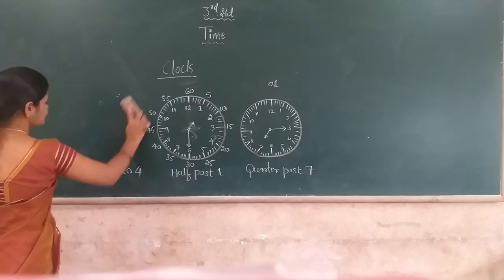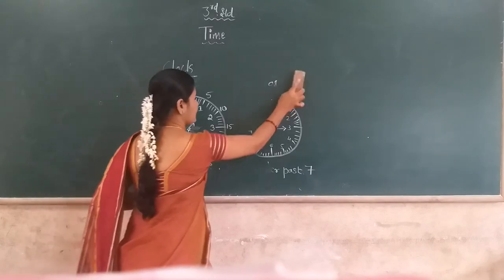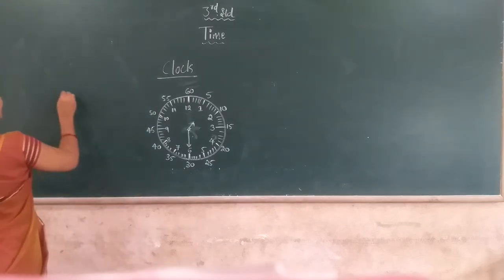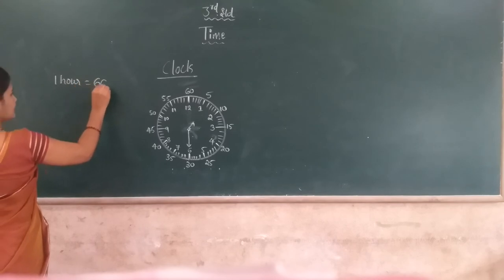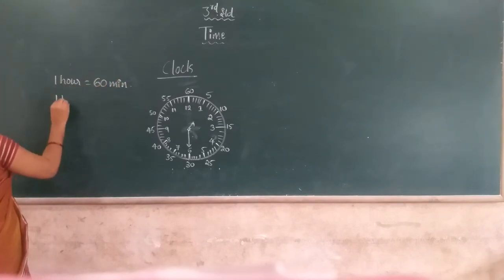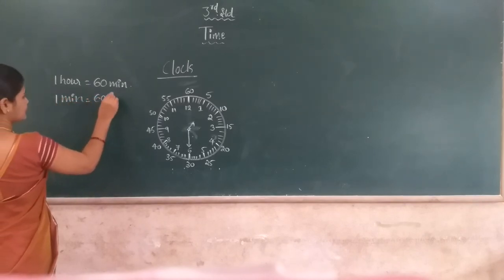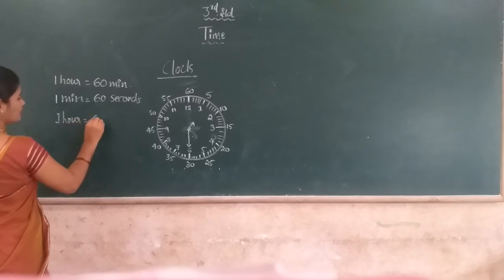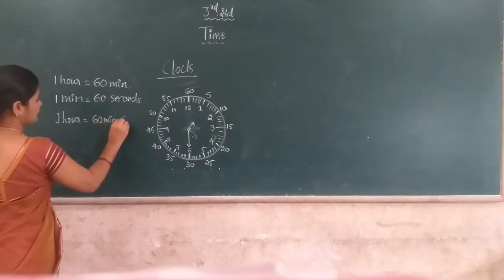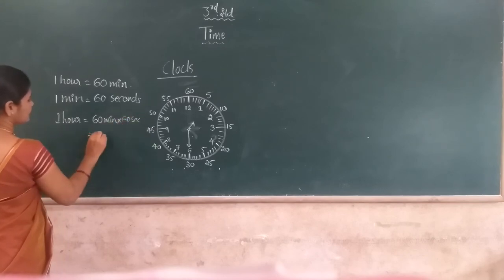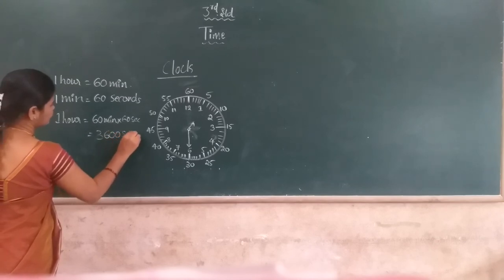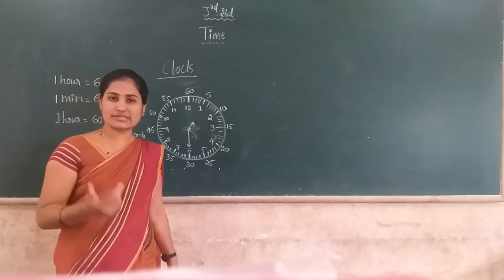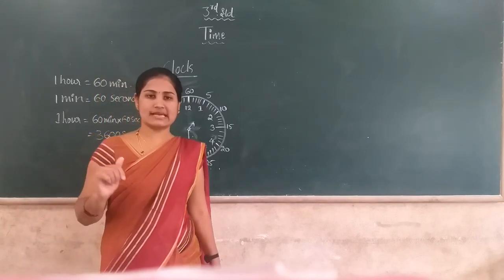Dear students, remember this information: how many minutes in one hour? One hour is equal to sixty minutes. One minute is equal to sixty seconds. So one hour is equal to sixty minutes multiplied by sixty seconds, which equals three thousand six hundred seconds.